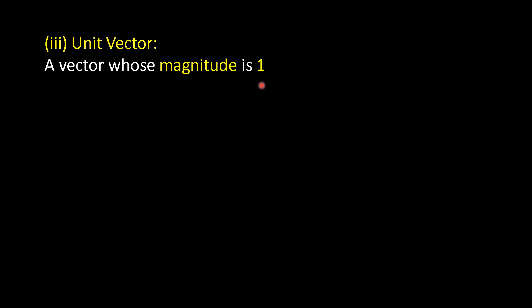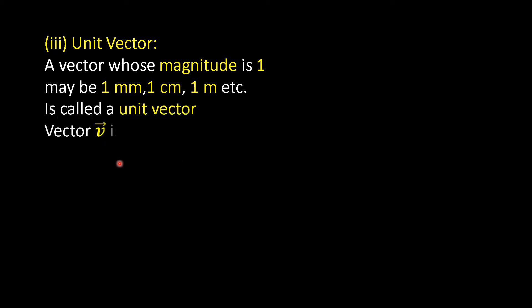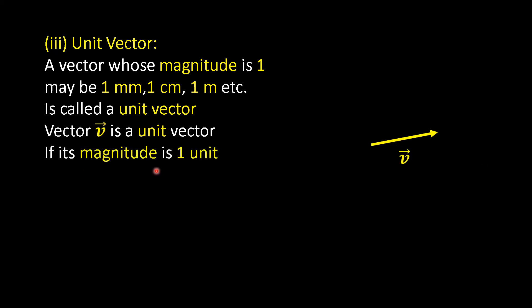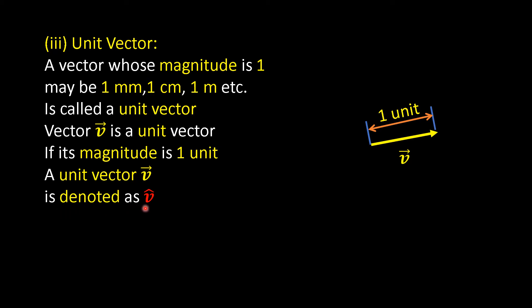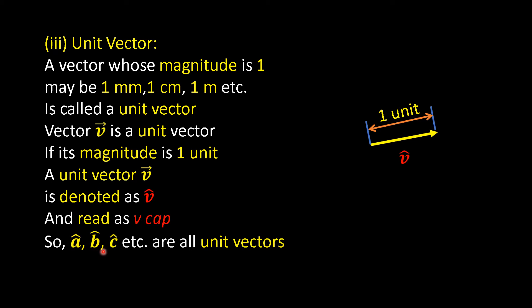Third is unit vector. A vector whose magnitude is 1 — which may be 1 mm, 1 cm, 1 m, etc. — is called a unit vector. Vector V-bar is a unit vector if its magnitude is 1 unit. A unit vector V-bar is denoted by V-cap and read as 'V cap'. So A-cap, B-cap, C-cap, etc. are all unit vectors.